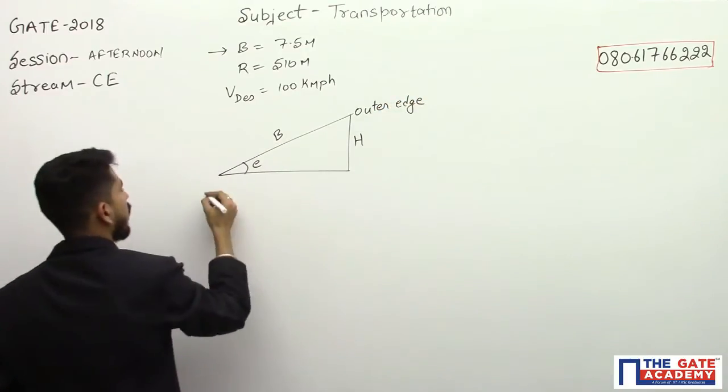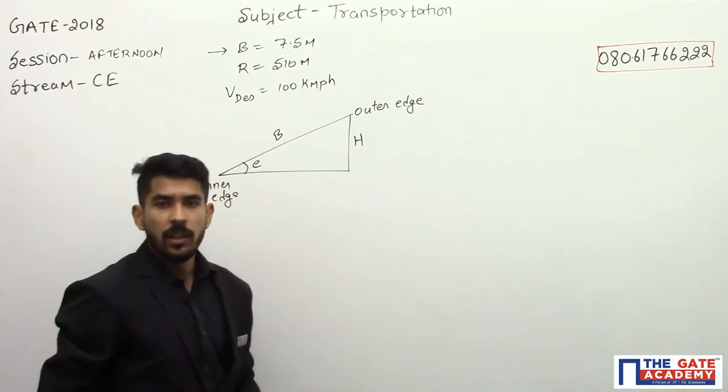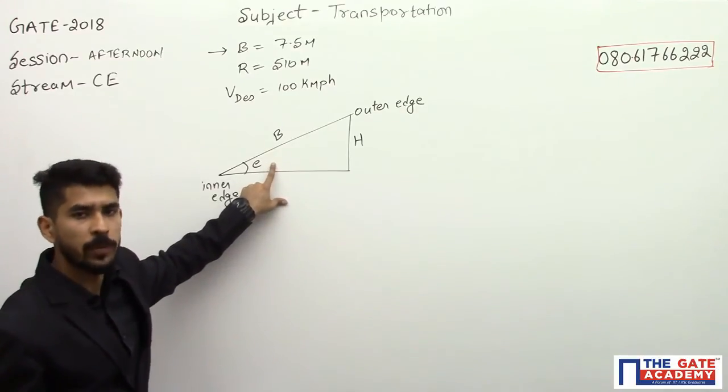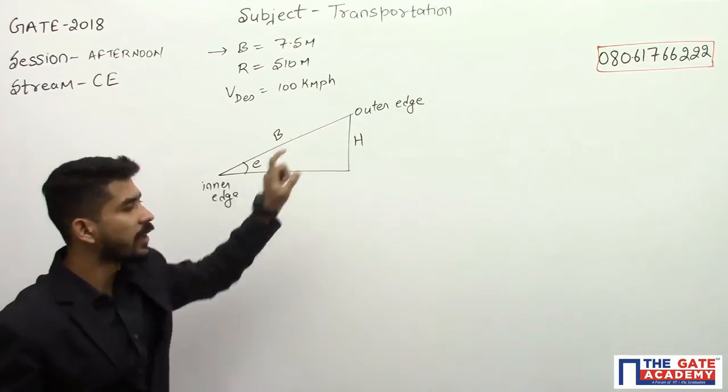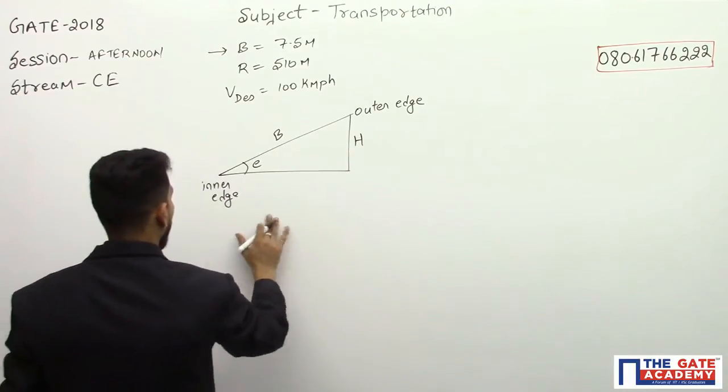This is the outer edge and this is the inner edge. What we have to do is first we have to calculate the value of super elevation. If we have the slope, if we have the super elevation, we can easily calculate the value of h.